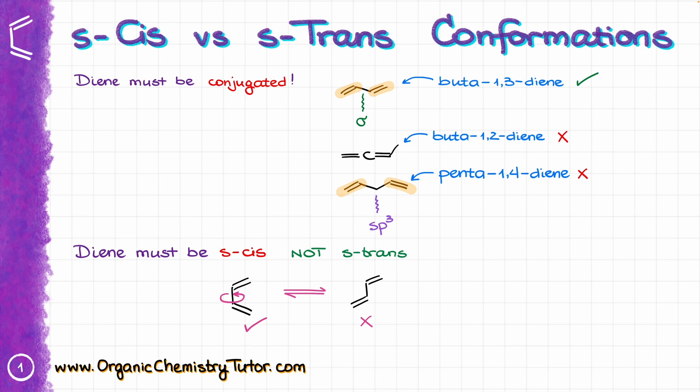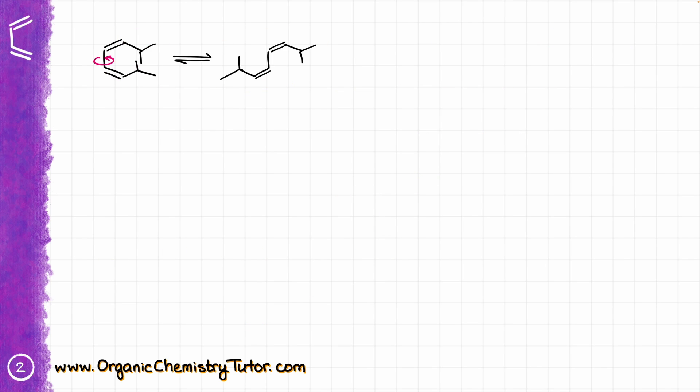Well, the problem is, not every diene is going to be able to assume the s-cis conformation, or will be in the s-cis conformation to begin with. In some cases, like for instance in this equilibrium over here, we may experience steric hindrances that would physically prevent the molecule from rotating around the single bond.